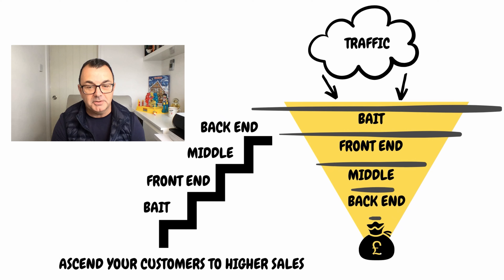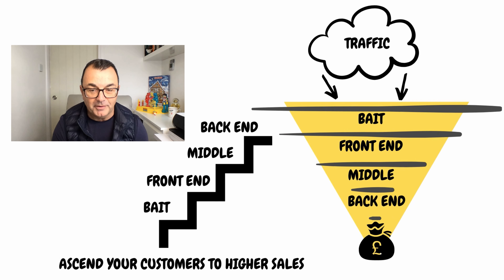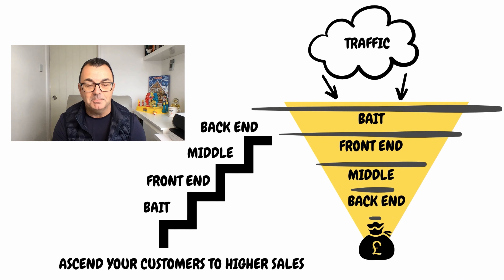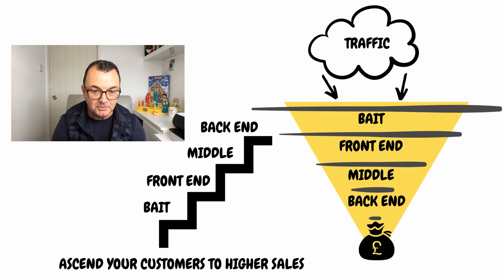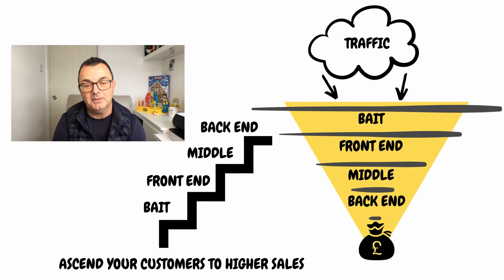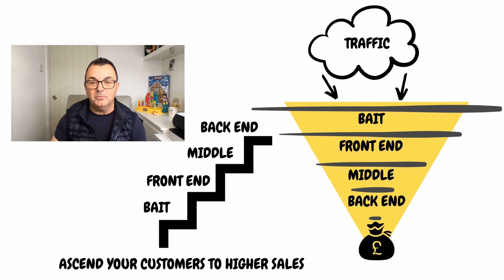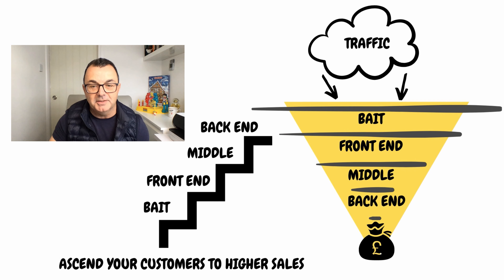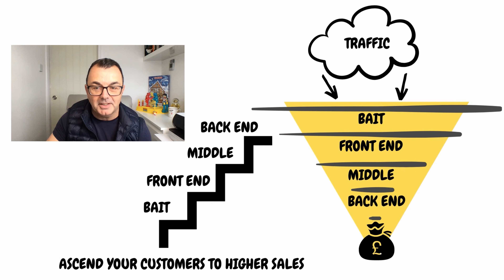This is really simplified and it's about sending your customers to a higher sales level. If you look at the diagram to the left of the funnel — the yellow funnel — to the left, the stairs in black, you're starting with the bait, you're looking at a front end offer, getting them into the middle, and then into the back end where they really start to buy a lot more from you.